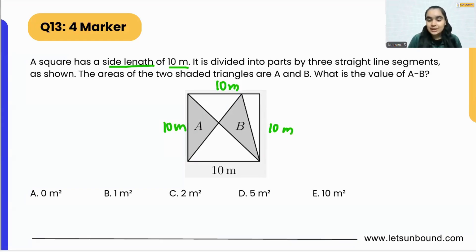It is divided into parts by three straight line segments. You can see it has been split into one, two, three line segments into multiple parts. The area of two shaded triangles are A and B. They have already given us the area of the shaded parts A and B. What is the value of A minus B?